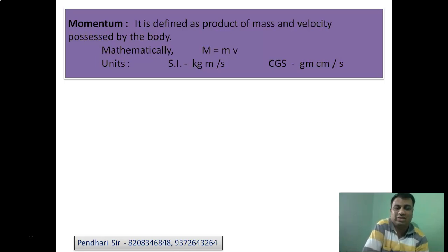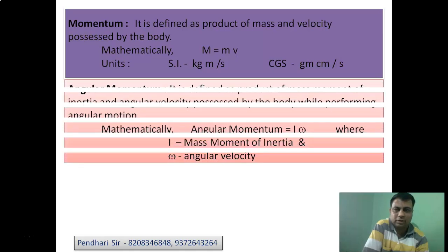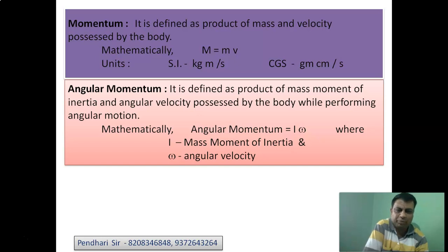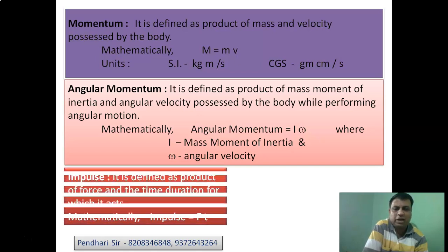Then angular momentum. Angular momentum is defined as the product of mass moment of inertia and angular velocity possessed by the body while performing rotational or angular motion. Angular momentum equals I·ω, where I is mass moment of inertia and ω (omega) is angular velocity.